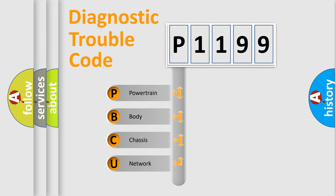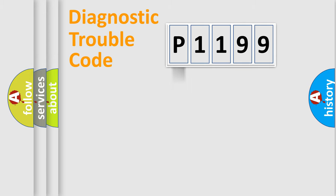We divide the electric system of automobile into four basic units: powertrain, body, chassis, and network. This distribution is defined in the first character code.